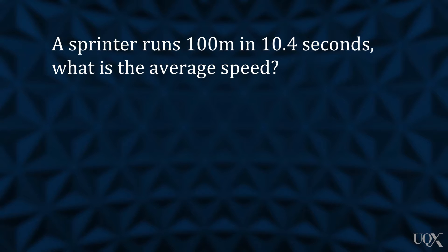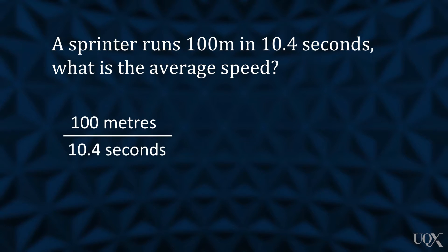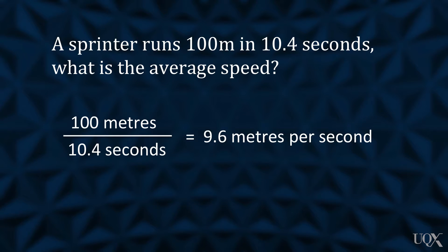Using the formula to calculate average speed, we divide the distance, 100 meters, by the time, 10.4 seconds, to get our answer of 9.6 meters per second.